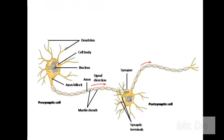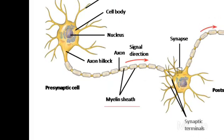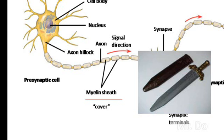Looking at the axon, have you noticed those weird little tiny burrito-like wrappings around the axon? Those things are called the myelin sheath. The word sheath means cover, like a sword cover. Before we learn the purpose of the myelin sheath, we're going to learn what it is.